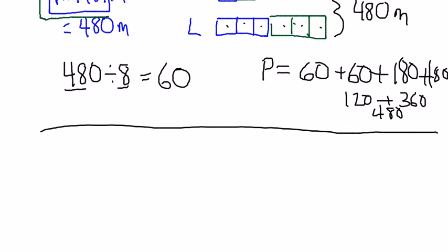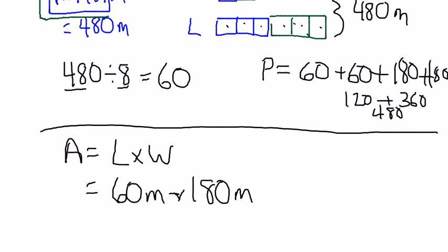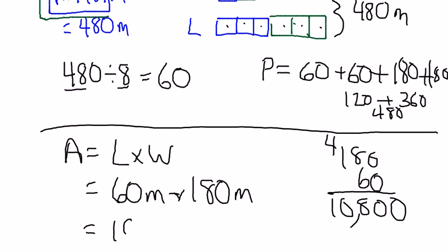Well, now I'm going to go to area equals length times width equals 60 meters times 180 meters. And if I multiply that out, I'm just going to do 18 times 6 here. 6, 10 plus my 2 zeros, I get 10,800 meters squared for my area.